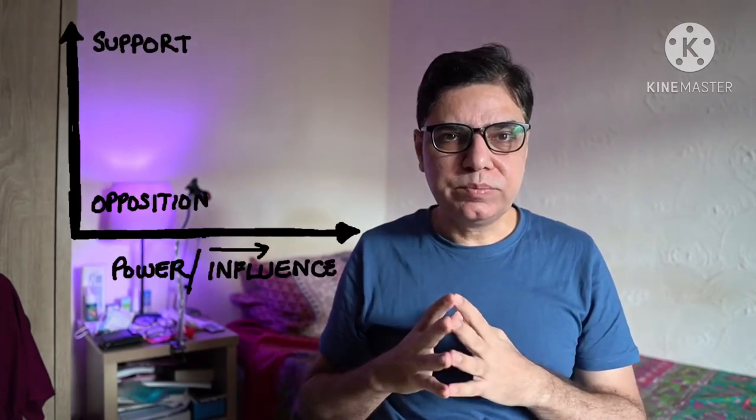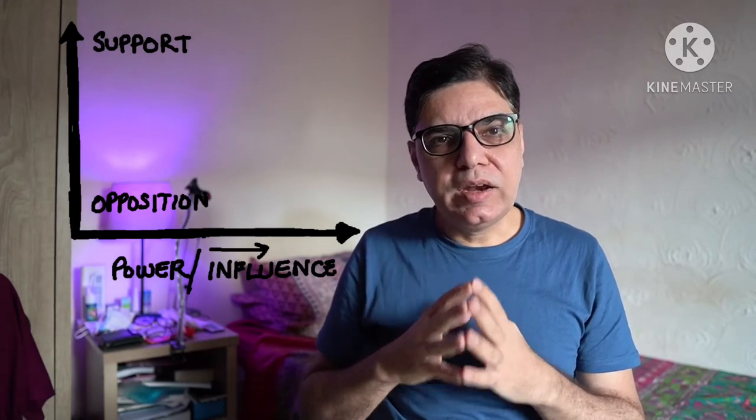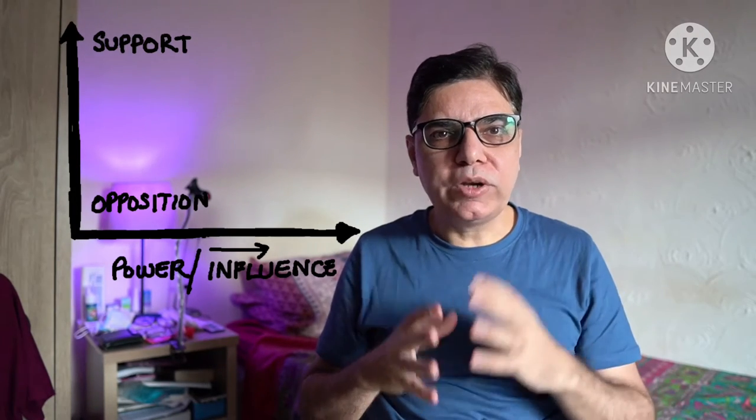How do we do a stakeholder analysis? Once we know who a stakeholder is, we make a matrix in which we identify two things: number one, how much influence or power that stakeholder has to affect the policy, and number two, whether they would be a supporter or an opponent of that policy. If they have high influence or high power, they are in a better position to influence that policy either in support of it or in opposition to it.